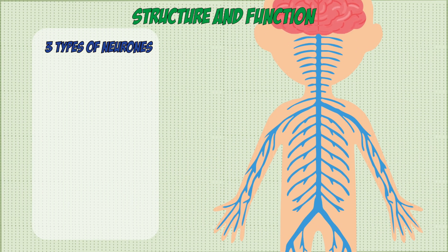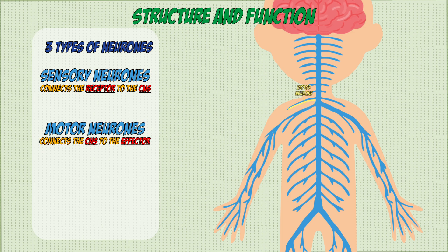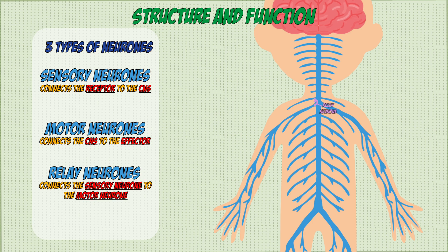There are three different types of neurons. The first is a sensory neuron, which connects the receptor to the CNS — it basically sends information from what's being sensed in the surroundings. The second is the motor neuron, which connects the CNS to the effector and carries information on how you respond to a stimulus. The third is a relay neuron, which connects the sensory neuron directly to the motor neuron — these are only found in reflex responses.